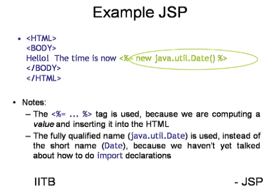In ordinary Java, if you want to use predefined methods from any package, you have to import those packages first and then use the method directly. The same approach applies here in JSP. We have a special tag for importing packages — the directive — which I will discuss in a future slide.